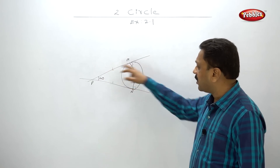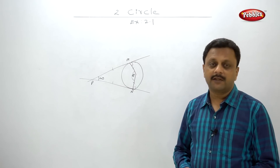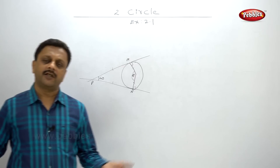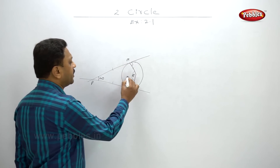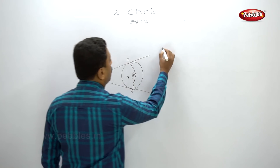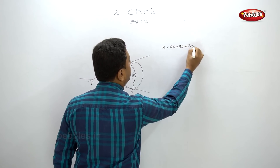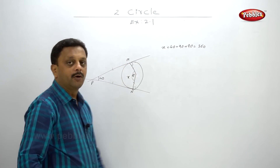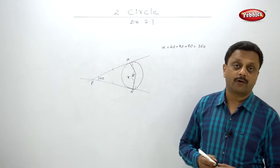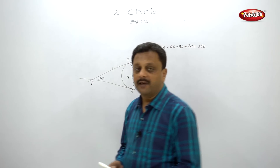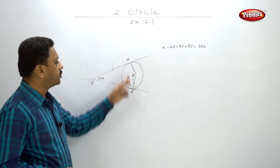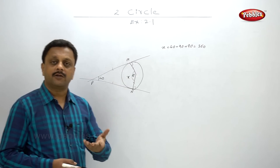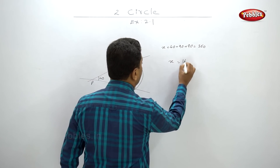Can you see that there are four angles? This is a quadrilateral PMNQ. The sum of all inner angles of a quadrilateral is 360 degrees. I will name the unknown angle X. So X plus 40 plus 90 plus 90 equals 360. These two 90s are 180 degrees, so 40 plus X equals 180. X equals 140 degrees.